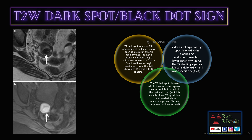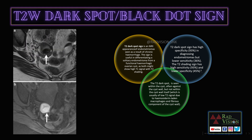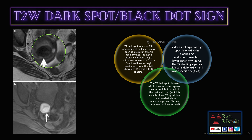Next, what is the T2 dark spot sign or black dot sign? The T2 dark spot sign is seen in case of endometriomas and helps in differentiating endometrioma from hemorrhagic cysts. This is the classical T2 dark spot sign — a low signal spot seen within the T2 weighted cyst, due to hemosiderin-laden macrophages and fibrous components of the cyst wall.